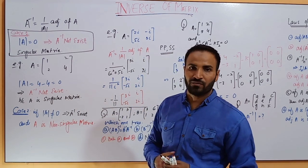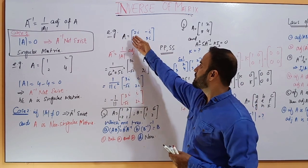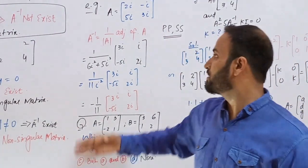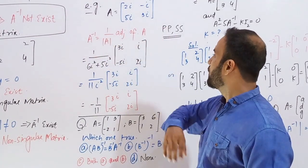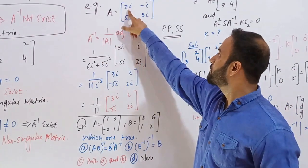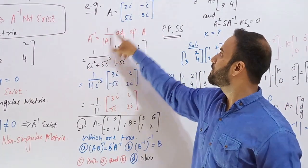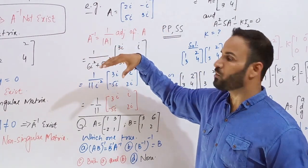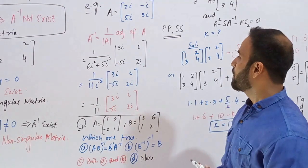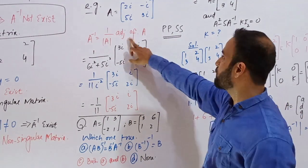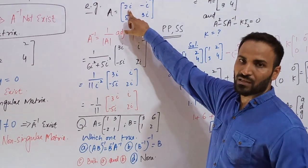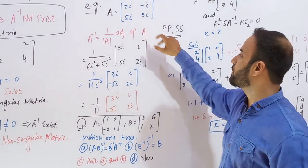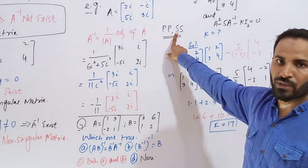For example, we have matrix A with first row [2i, -i] and second row [5i, 3i], and we want to find the inverse. The formula is 1 over |A| times adjoint of A. The determinant |A| = 2i × 3i = 6i², minus (-i × 5i) = plus 5i². For the adjoint of a 2×2 matrix, we use the PP-SS rule: principal diagonal elements change position (PP), and secondary diagonal elements change sign (SS).